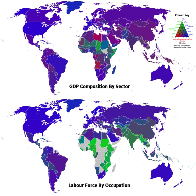The Industrial Revolution led to the development of factories for large-scale production with consequent changes in society. Originally the factories were steam-powered, but later transitioned to electricity once an electrical grid was developed. The mechanized assembly line was introduced to assemble parts in a repeatable fashion, with individual workers performing specific steps during the process. This led to significant increases in efficiency, lowering the cost of the end process. Later, automation was increasingly used to replace human operators, a process accelerated with the development of the computer and the robot.